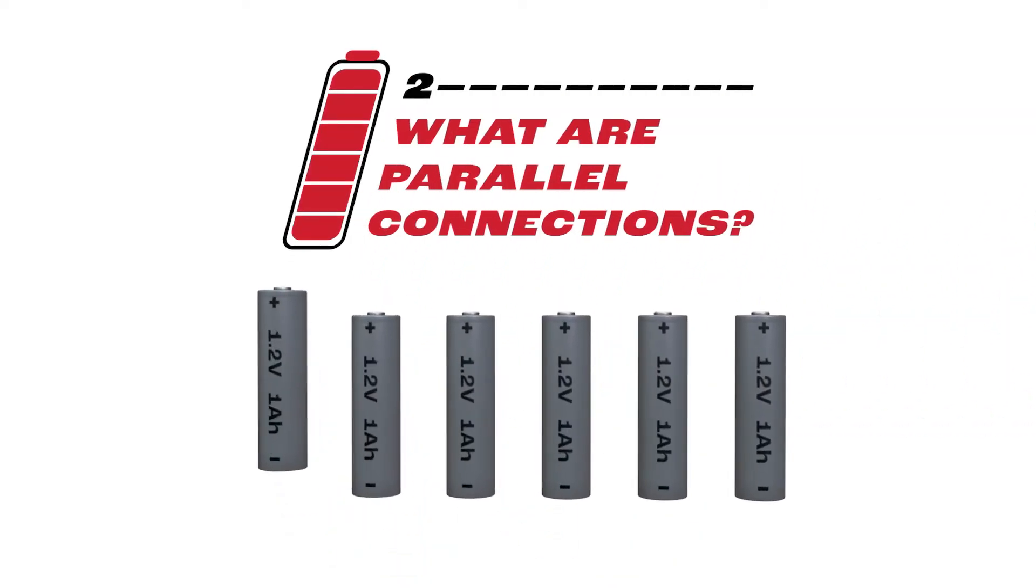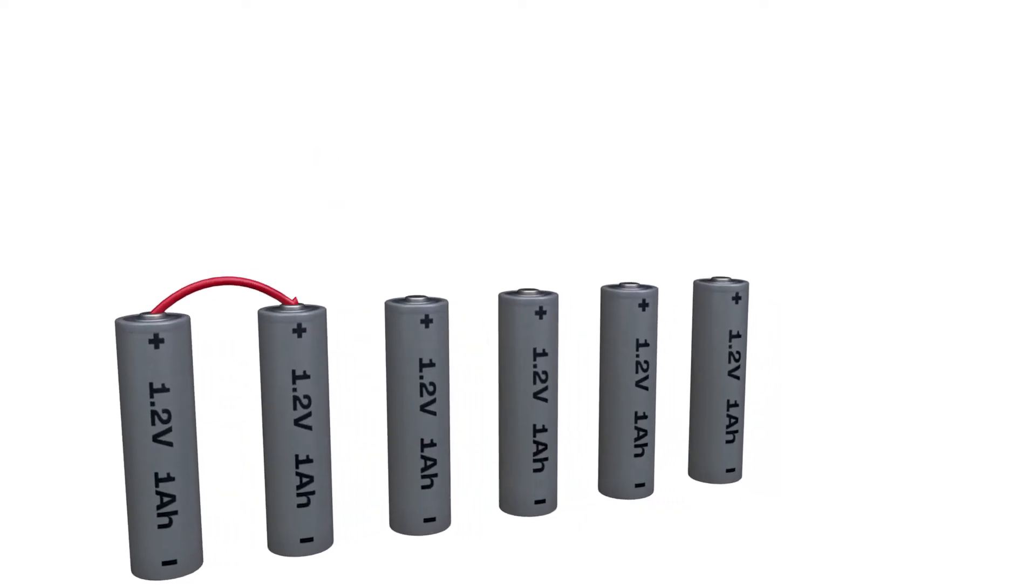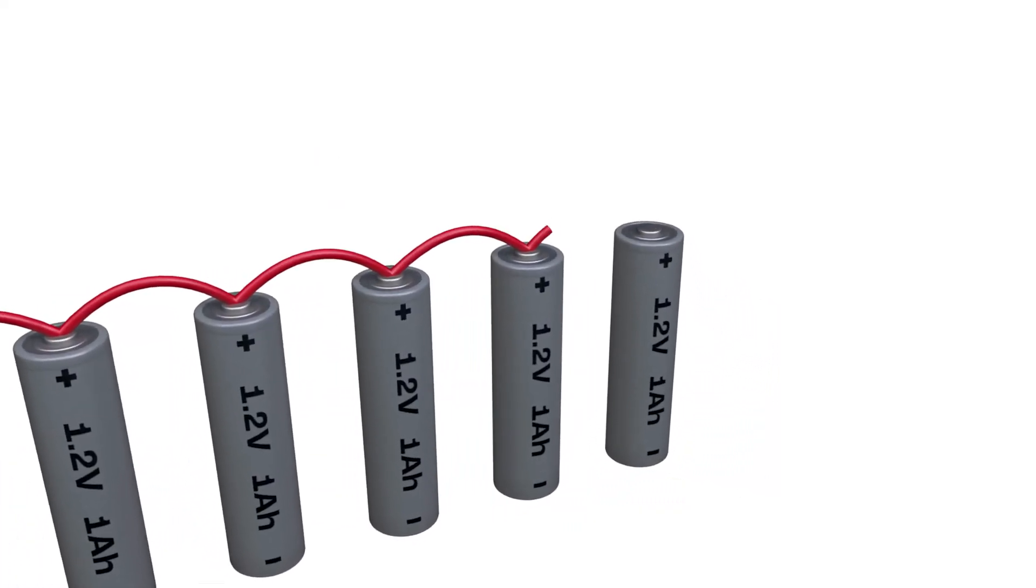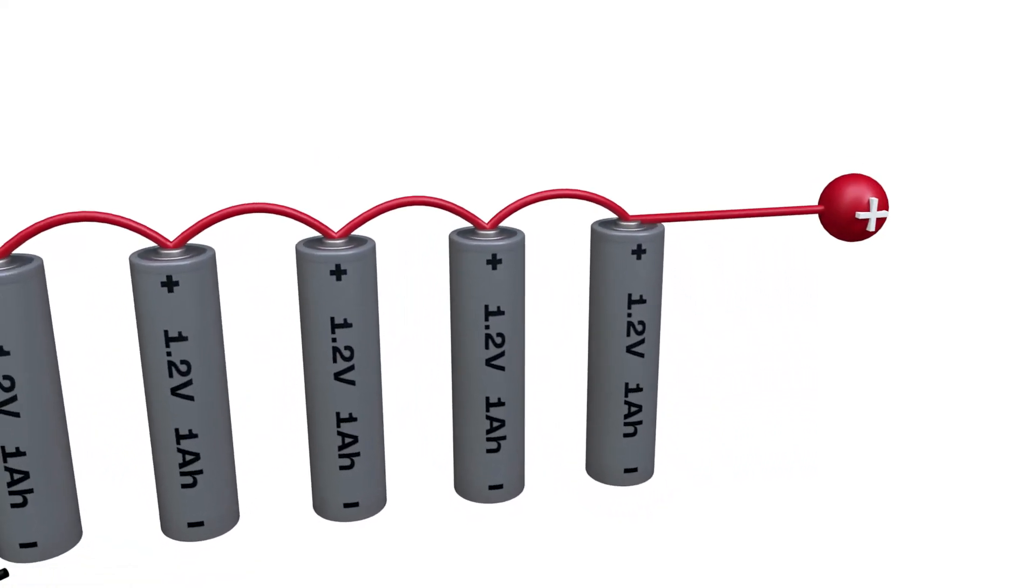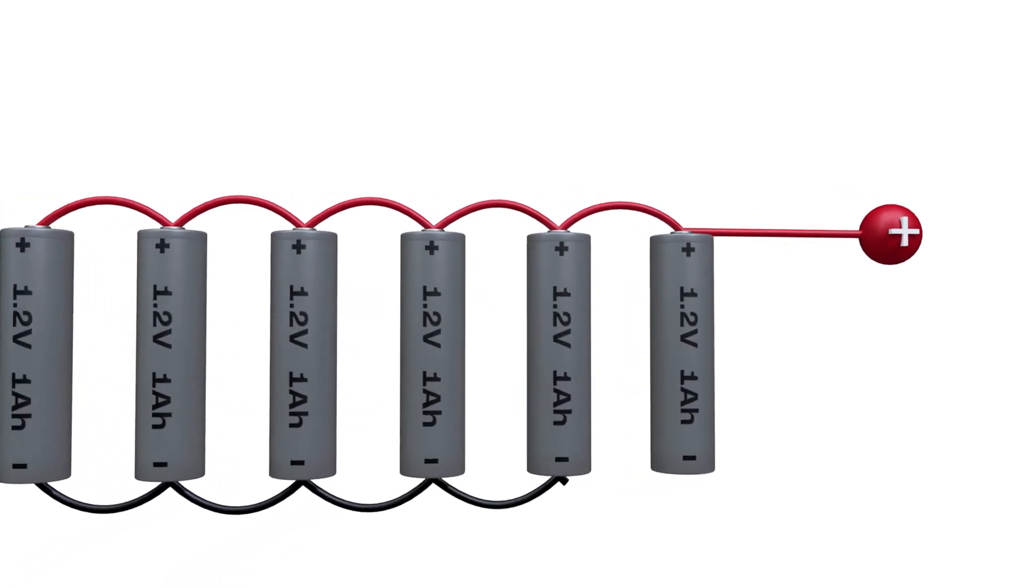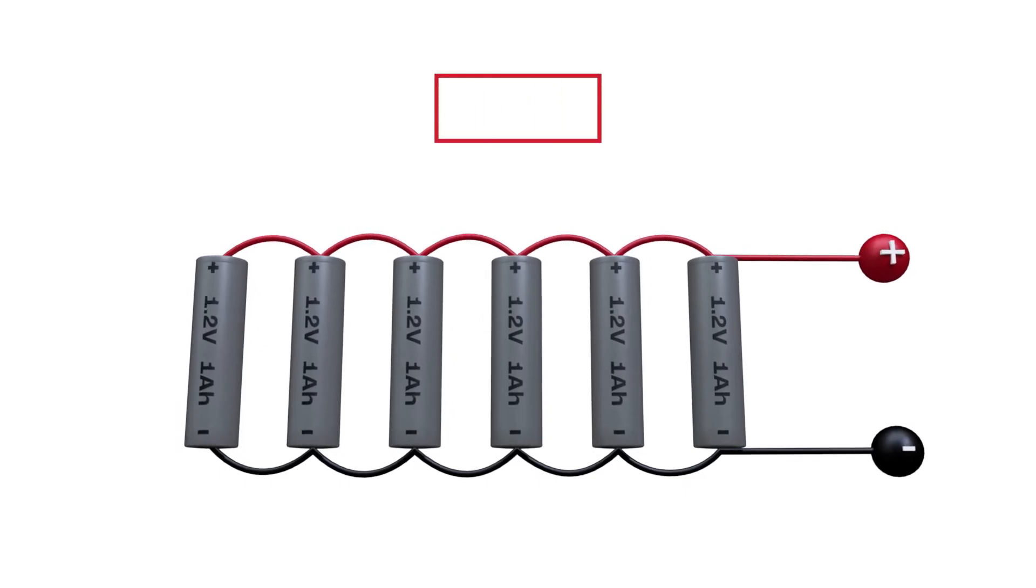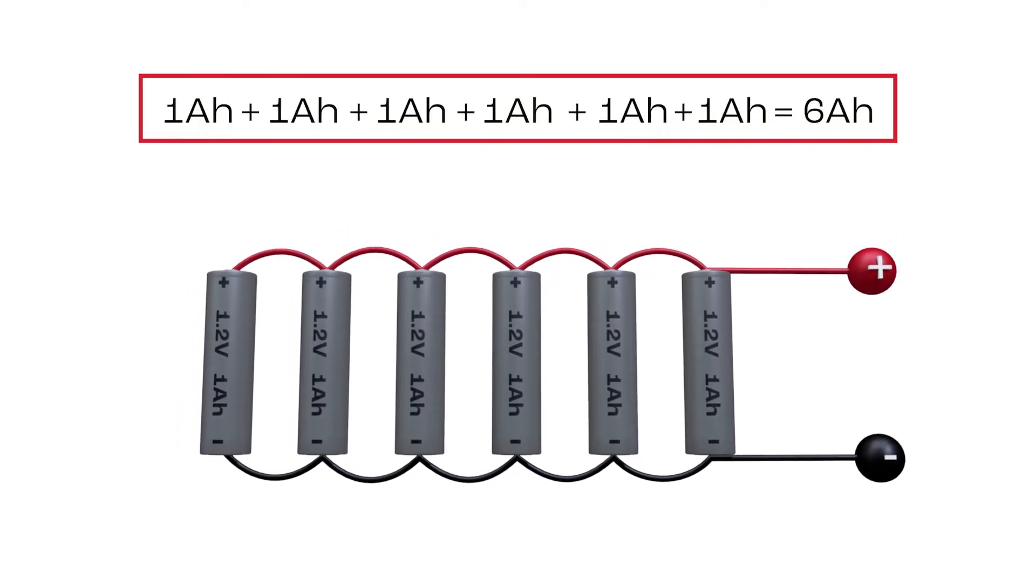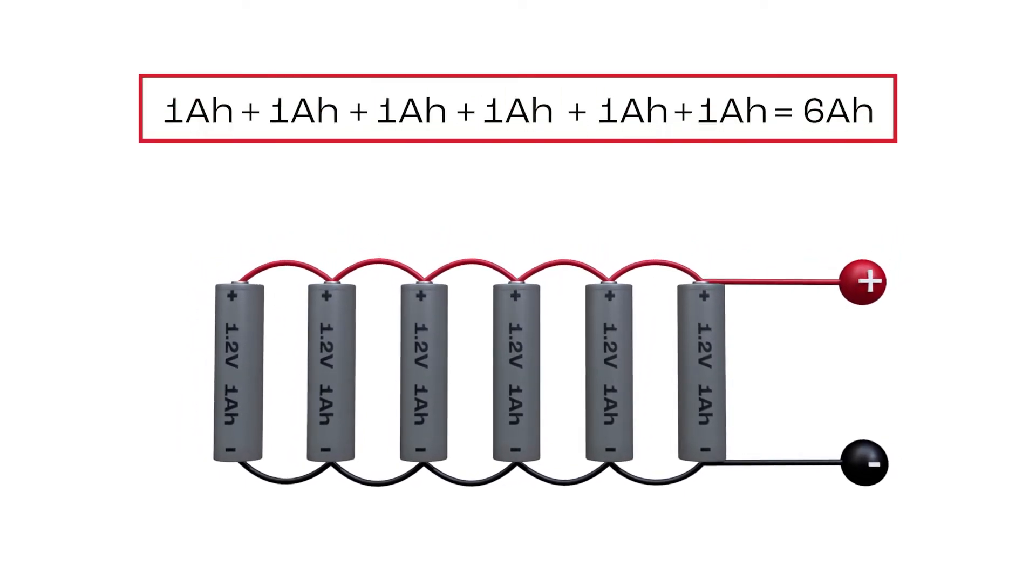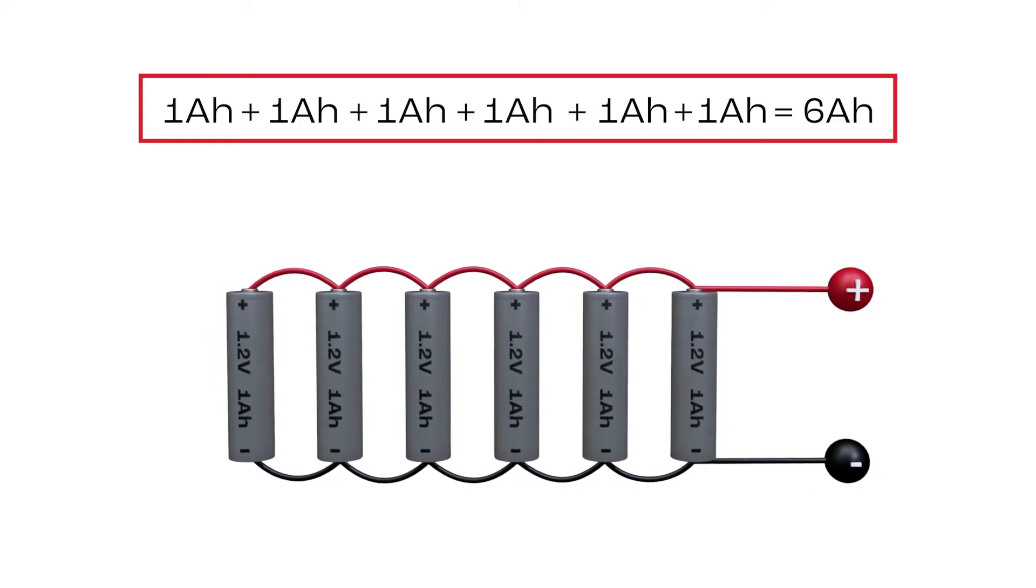What is a parallel connection? Parallel connections are created by connecting the positive terminal of one battery to the positive terminal of the next battery and the negative terminal of one battery is connected to the negative terminal of the next battery. When cells are connected in parallel, their capacity and amp hours will be added to each other. Therefore, it increases the total capacity of the battery pack while the voltage remains the same.